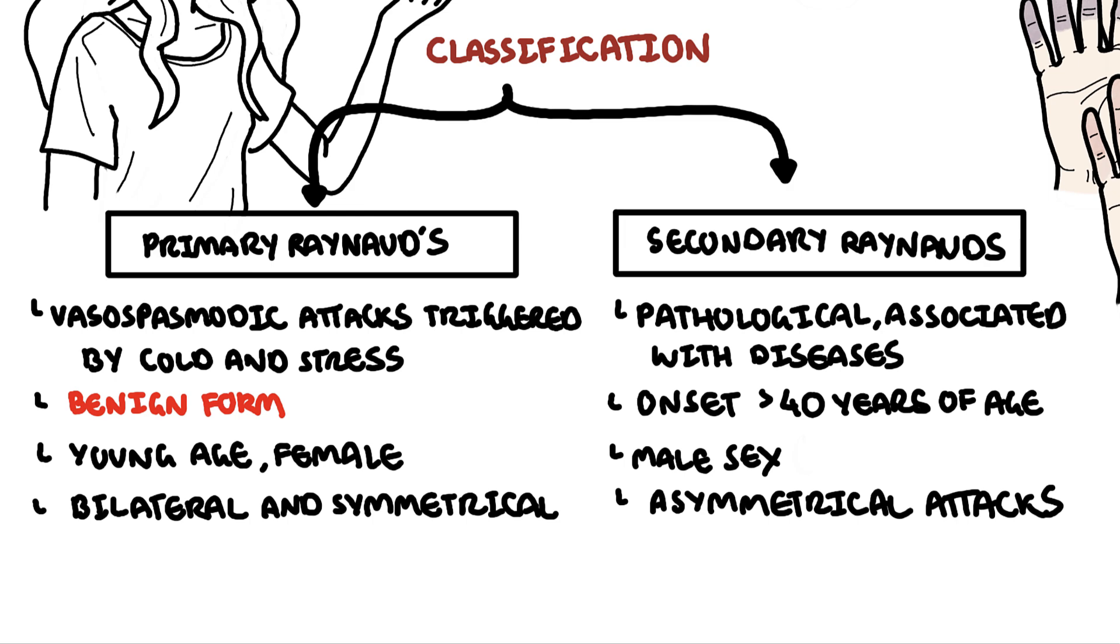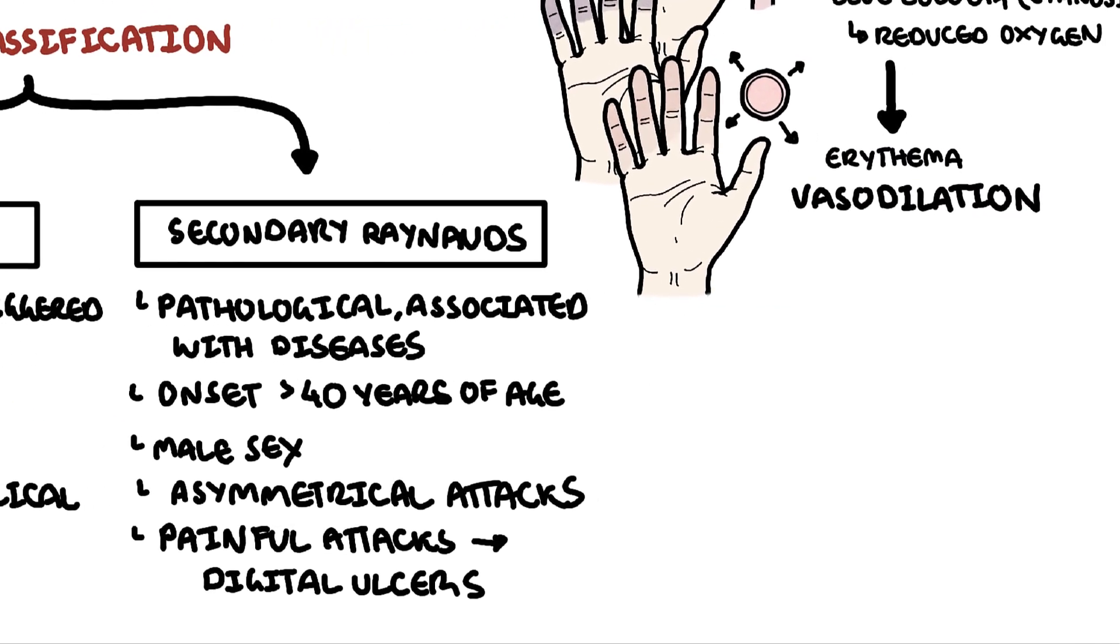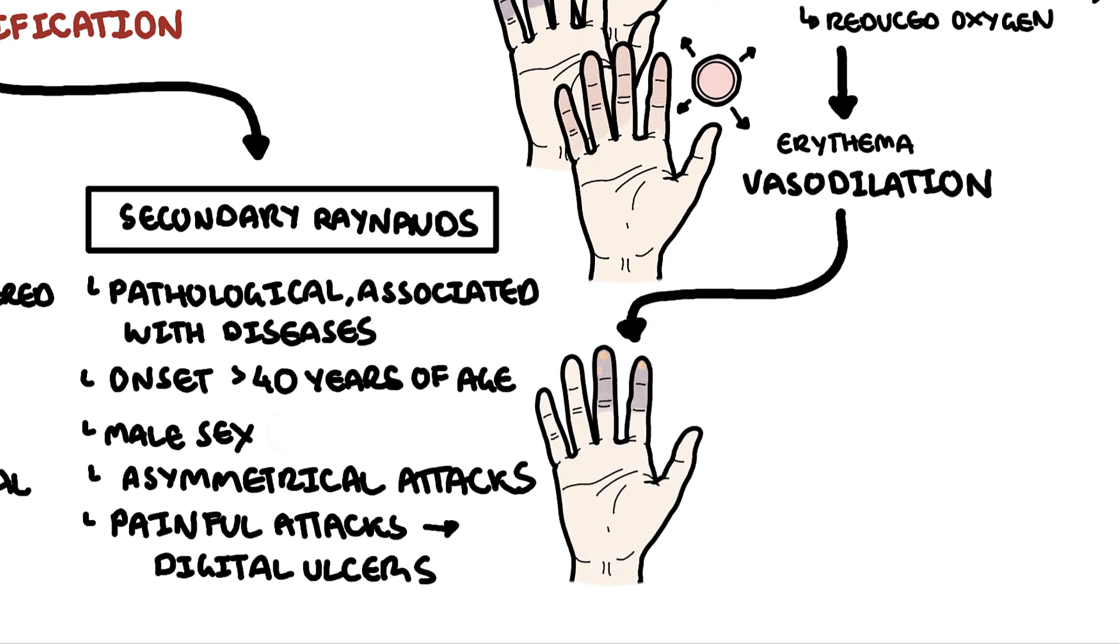Secondary Raynaud's phenomenon is more severe and can be painful. Secondary Raynaud's phenomenon has a higher risk of complications such as ulceration of the digits, gangrene, or tissue loss. Here's an example of a hand with secondary Raynaud's phenomenon that has developed digital ulceration.